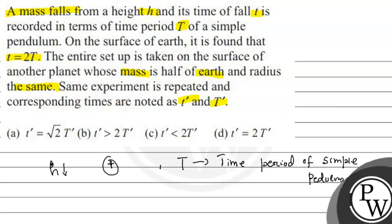This setup is first done on Earth where small t equals 2 times capital T. On the other planet, t dash and capital T dash need to be found.